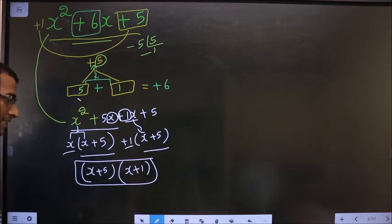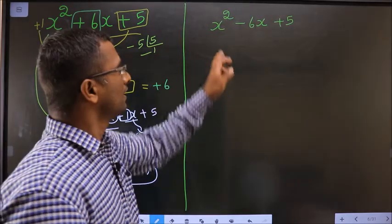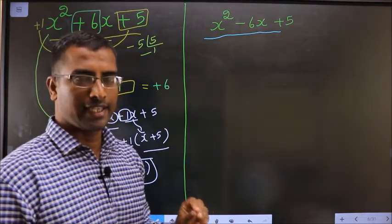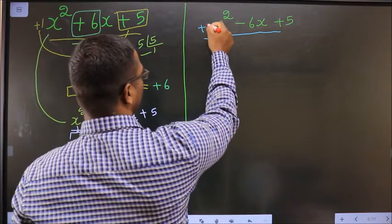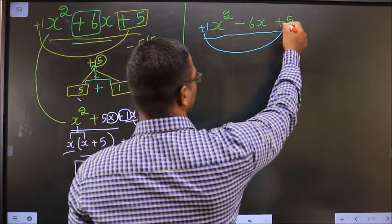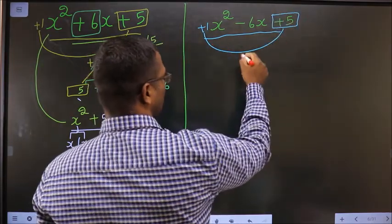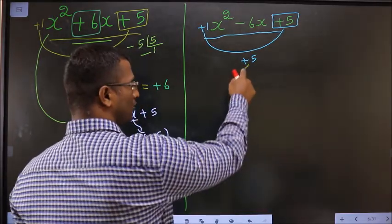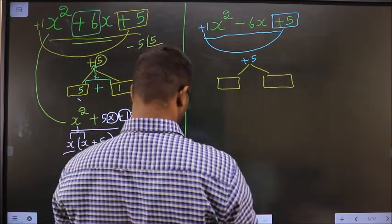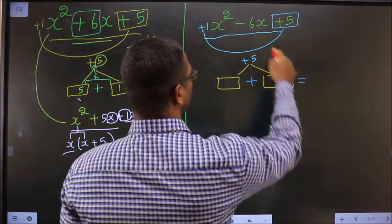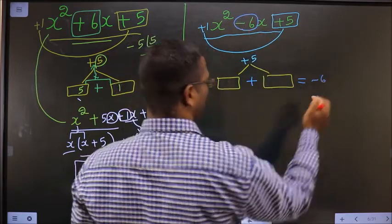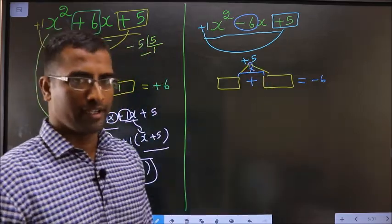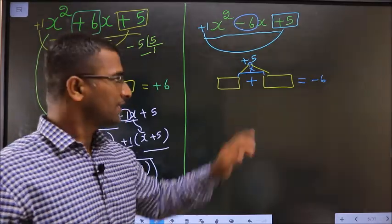Now factorize x squared minus 6x plus 5. How do we factorize it? Step 1: whatever number you have here should be multiplied to the constant, that is plus 5 in this case, so 1 into plus 5 is plus 5. Next, you should look for two numbers such that when you add them you get this middle number, that is minus 6.